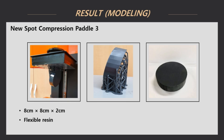Next is the design of the last spot compression pedal. If different heights exist in the compression pedal, a uniform concentration value cannot be provided if the thickness is partially changing. It was designed in a round shape with no angles, considering the pain of the patient when the compression pedal has sharp corners. Modeling two and three used flexible resin, which is thicker than Modeling one, to relieve patient pain.